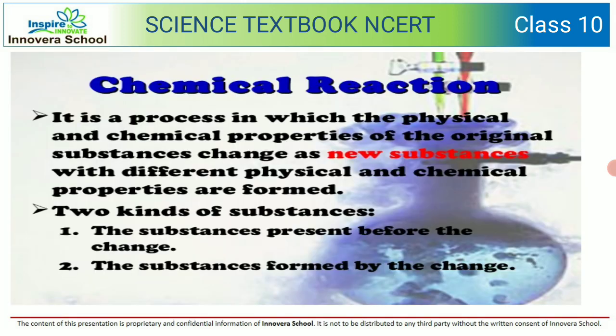A chemical reaction is a process in which the physical and chemical properties of the original substance change as new substances with different physical and chemical properties are formed. There are two kinds of substances involved: the substance present in the reaction, and the substance formed by the reaction.